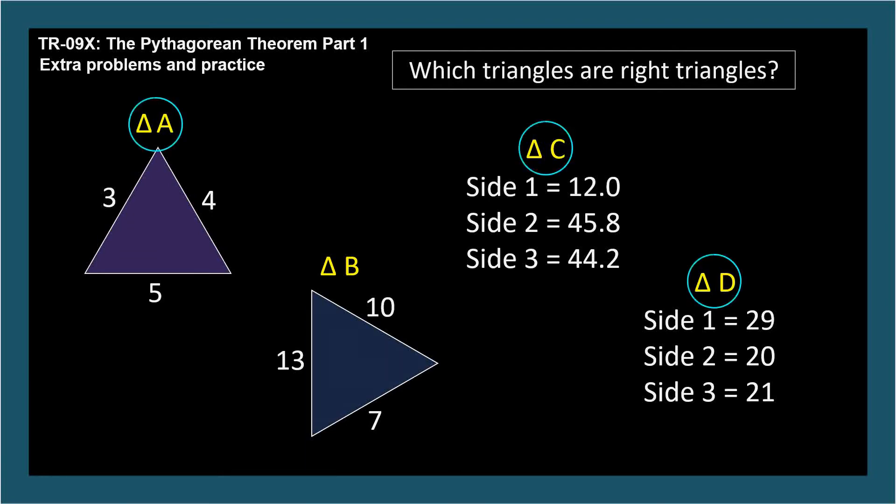Triangles a, c, and d are right triangles. We apply the Pythagorean theorem to each triangle — if the equation is true, the triangle is a right triangle; otherwise, it isn't. Of course, the candidate for the hypotenuse is always the longest side.